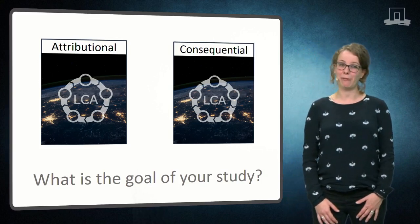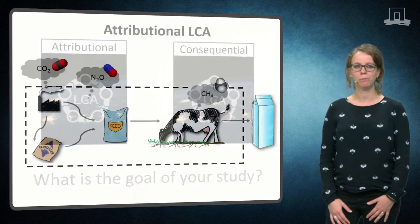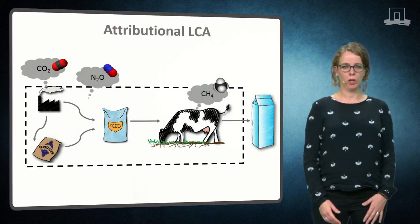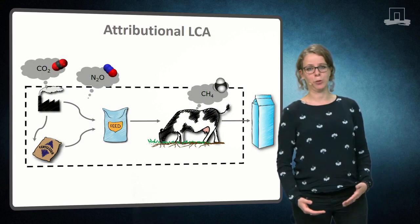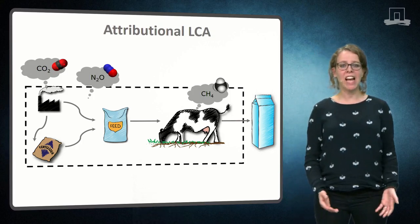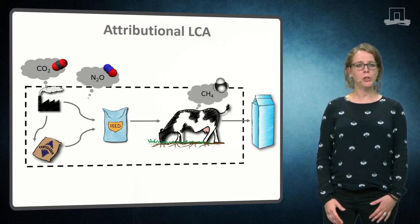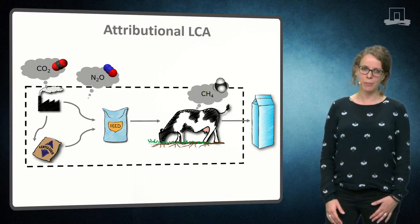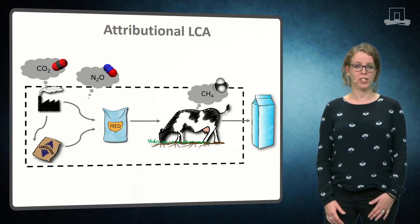So far this might sound a bit vague, but let's picture the following situation. You are a dairy farmer and you are asked to lower the emission of greenhouse gases for the milk that you produce. As a first step, you want to gain insight into the current situation — in other words, you want to monitor and report the emissions of your system in its current state, and you want to identify the hotspots of your system.